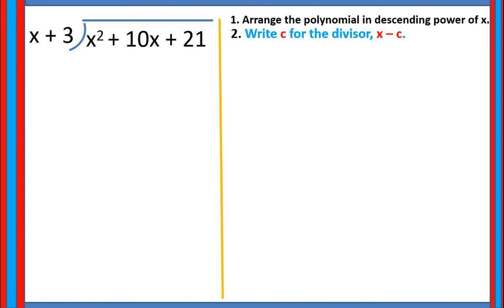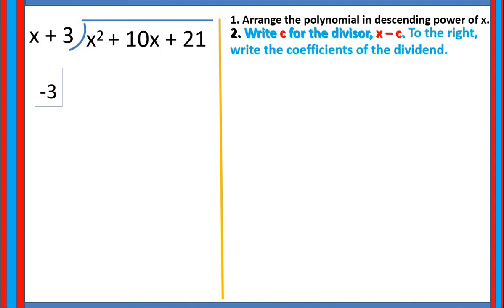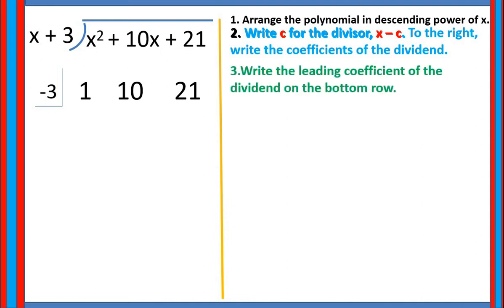So the value of z is negative 3. We write it this way, and then to the right of the value of z, we write the coefficients of the dividend. Our dividend is x squared plus 10x plus 21, and the coefficients are 1, 10, and 21. Next, write the leading coefficient of the dividend on the bottom row. Our leading coefficient is 1, so we write that on the bottom row.